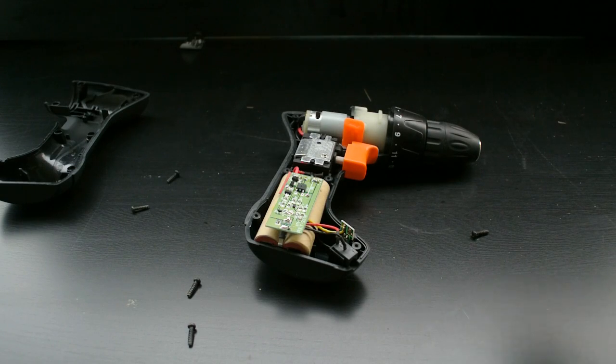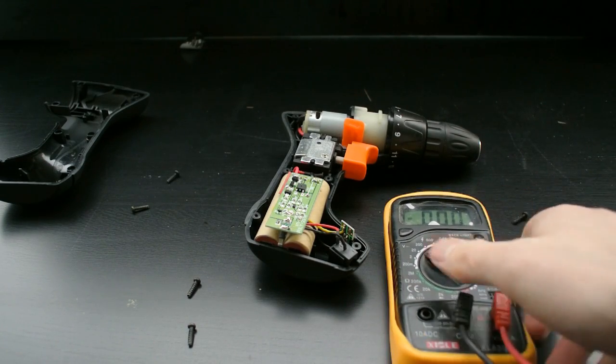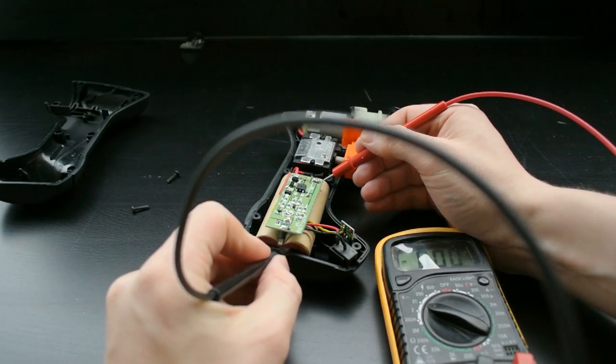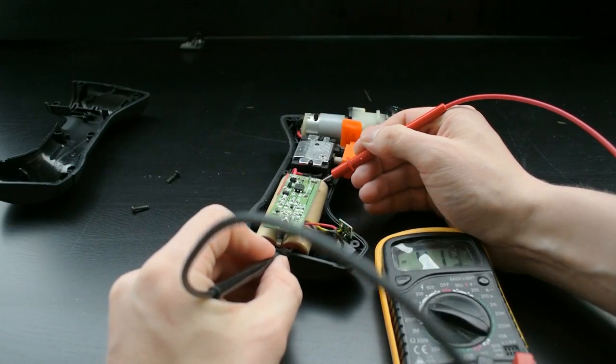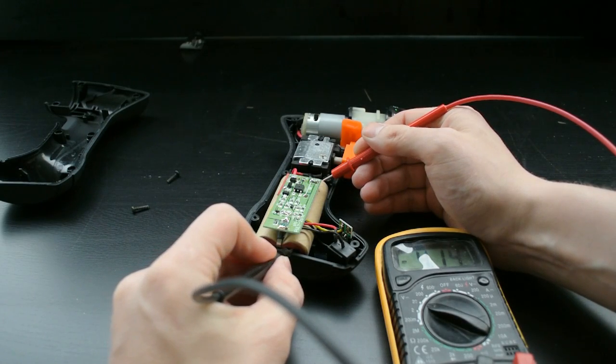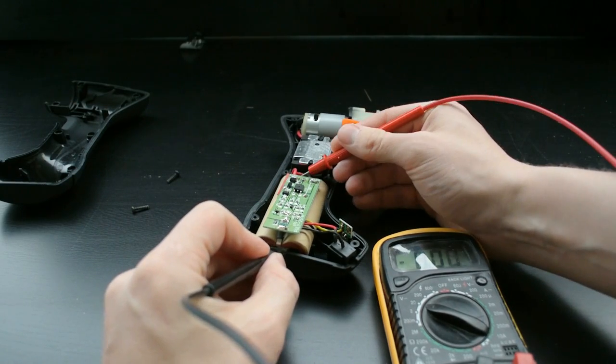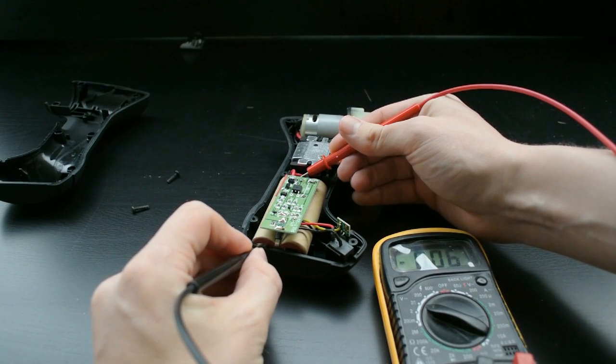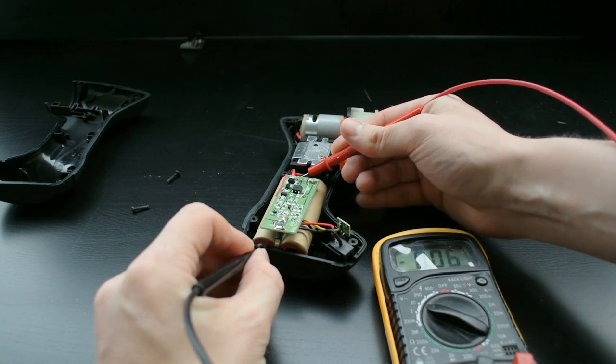Now let's measure the batteries inside the device. In the first battery we can get 4 volts, which seems okay. And the other battery gives us 0.06 volts. That's not very good.